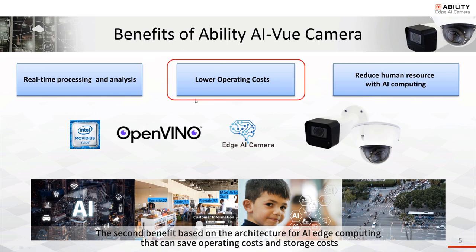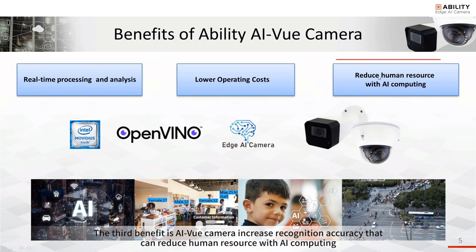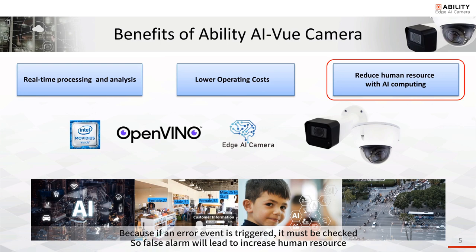The second benefit is that the AI edge computing architecture can save operating costs and storage costs. The third benefit is that AI View Camera increases recognition accuracy, which can reduce human resource requirements. Because if an error event is triggered it must be checked, and false alarms lead to increased human resource usage.